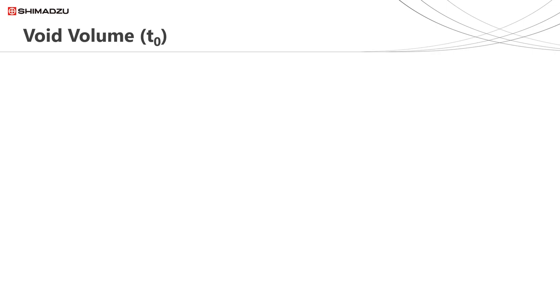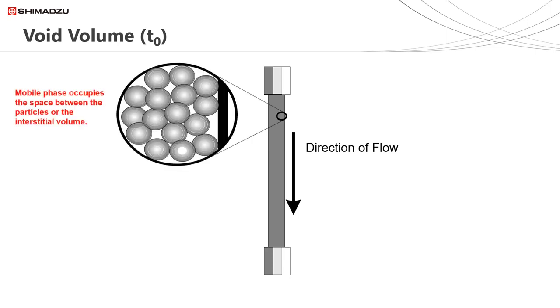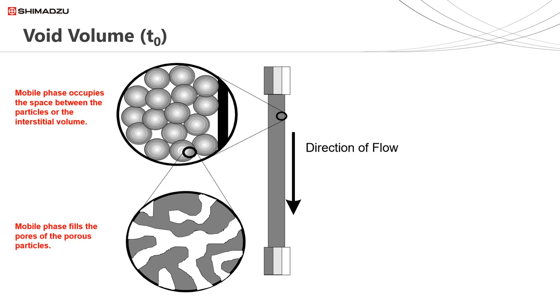Before we discuss retention factor, selectivity, efficiency and resolution in more detail, the fundamental concept of the void volume should be understood. There is a volume within any column which is not occupied by the particles. This volume is occupied by the mobile phase and is found in the space between the particles, called the interstitial volume, and the space in the pores of the particles — this space is called the void volume. Analytes which do not interact with the stationary phase elute from the column in a volume equal to the void volume in the column.